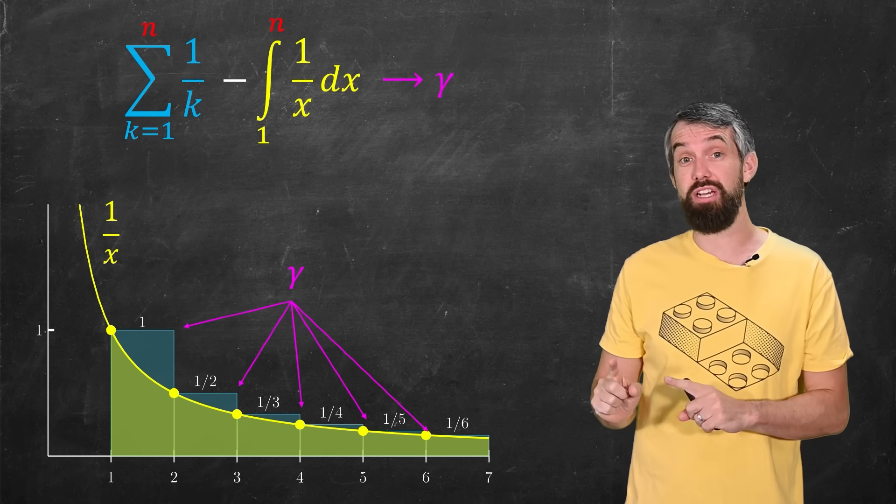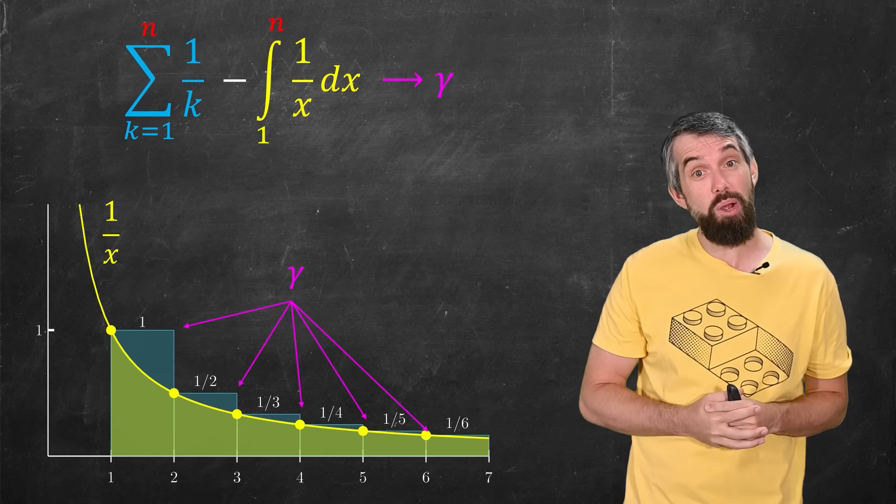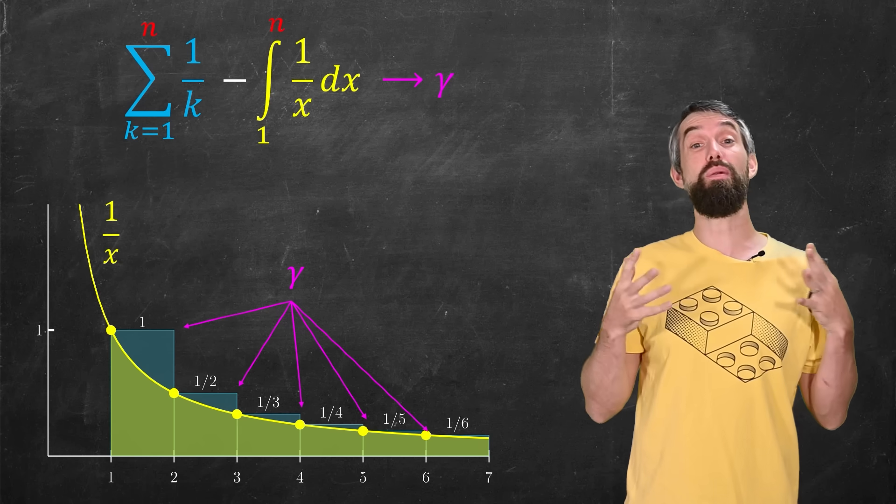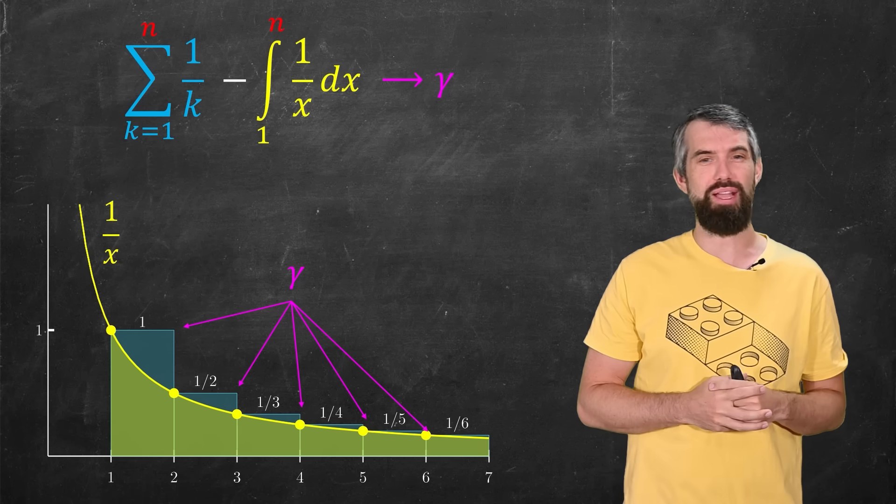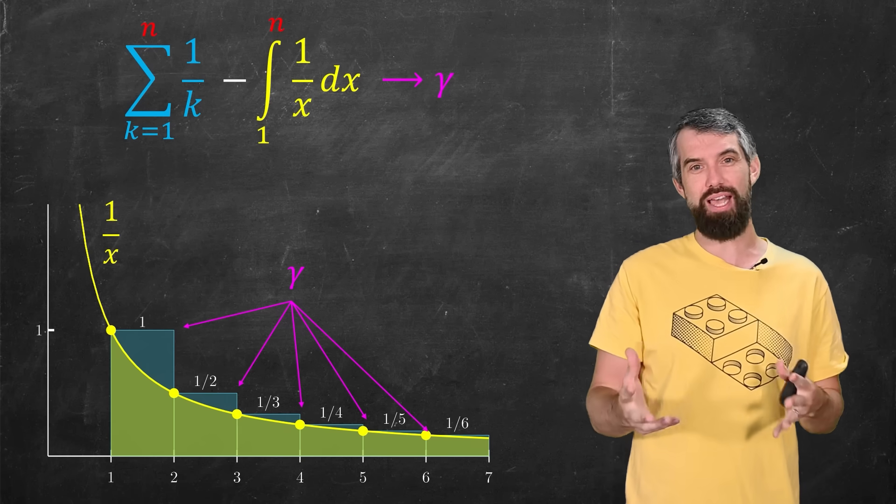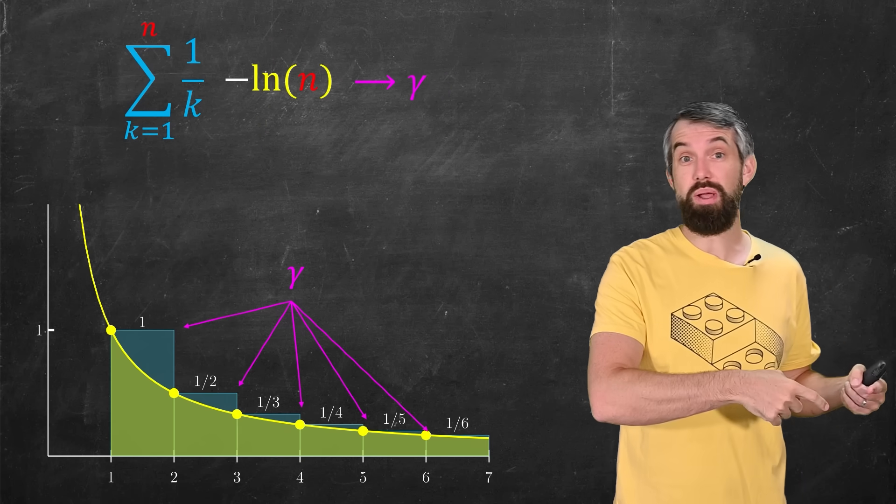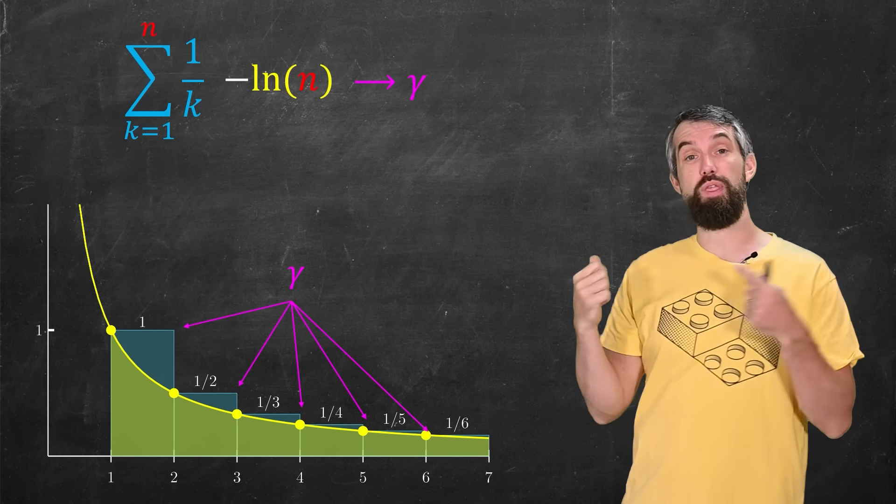But thankfully, those areas start converging. In fact, they converge to a finite number, which is called the Euler-Mascheroni constant, and I'll represent it here with the gamma. It's about 0.577. And this interval, well, that interval is just the logarithm of n.